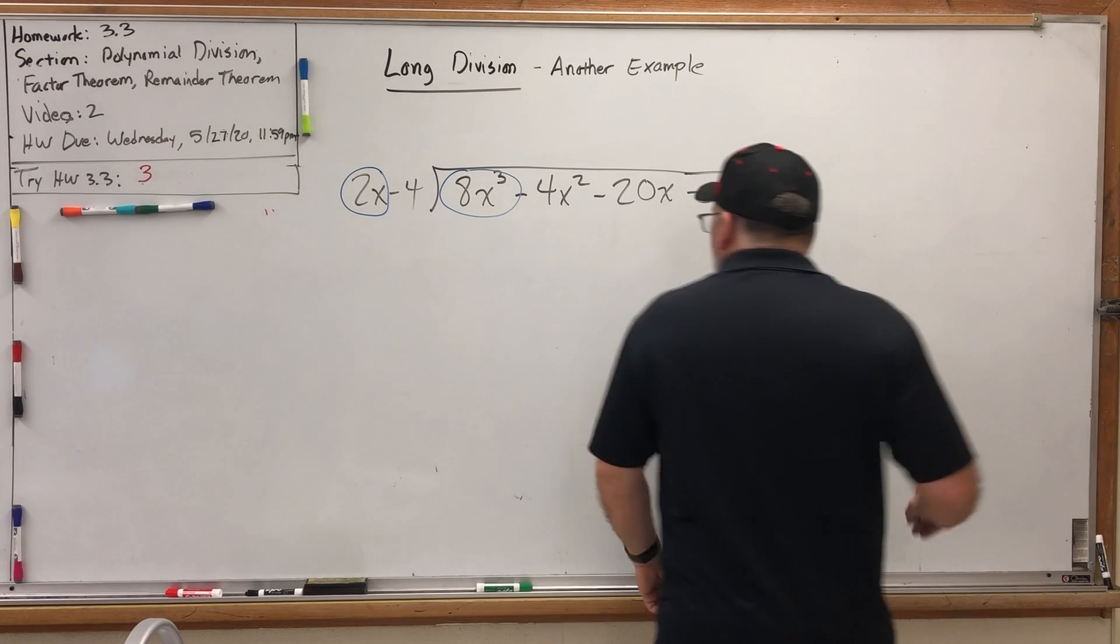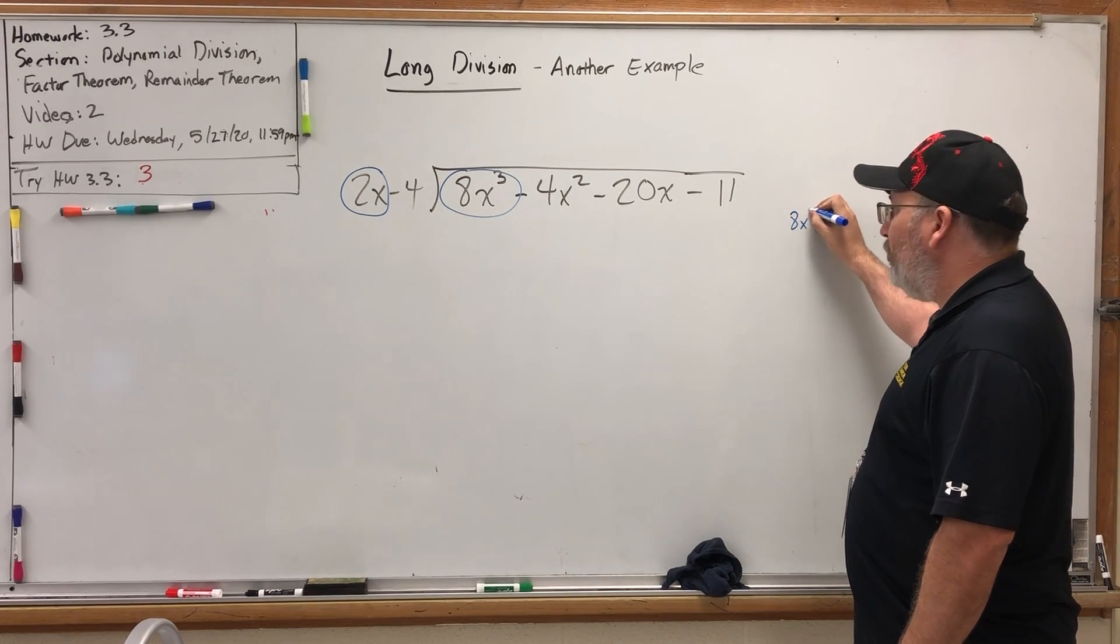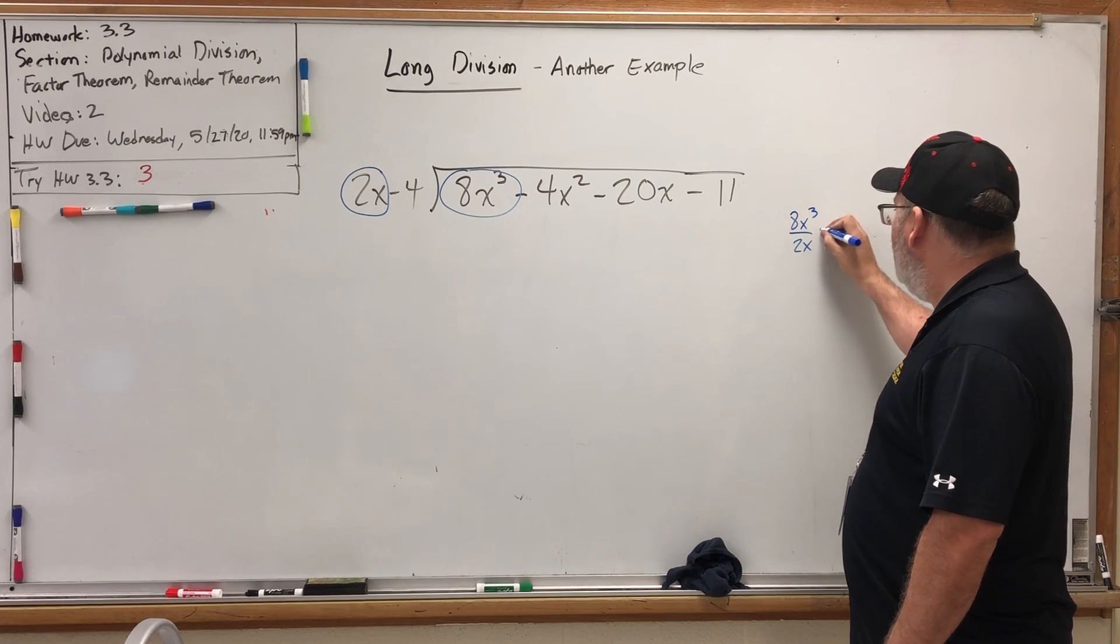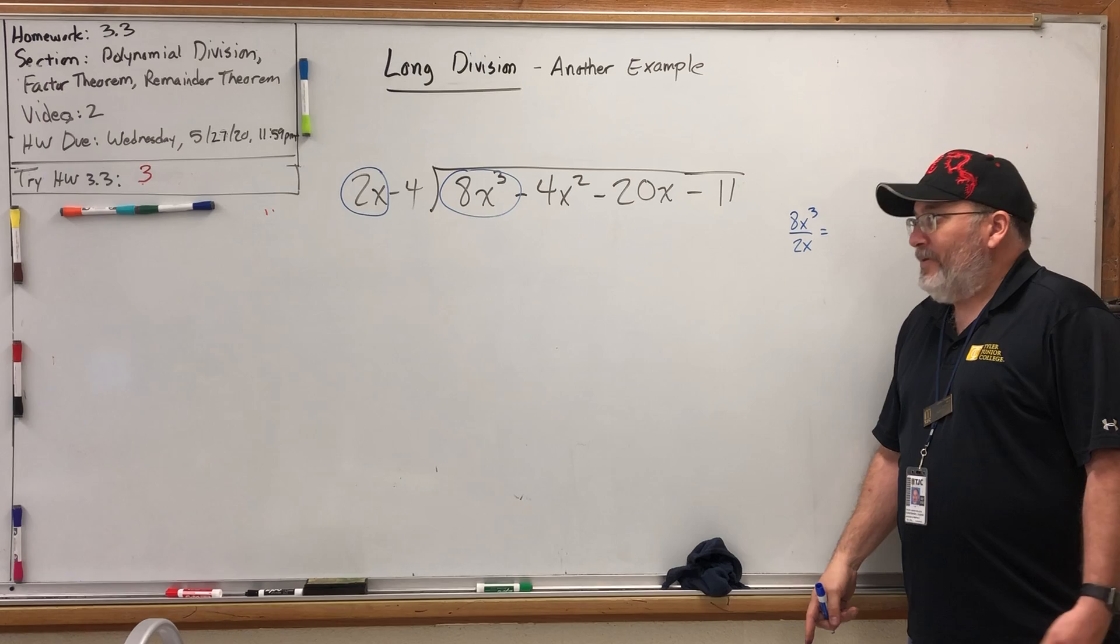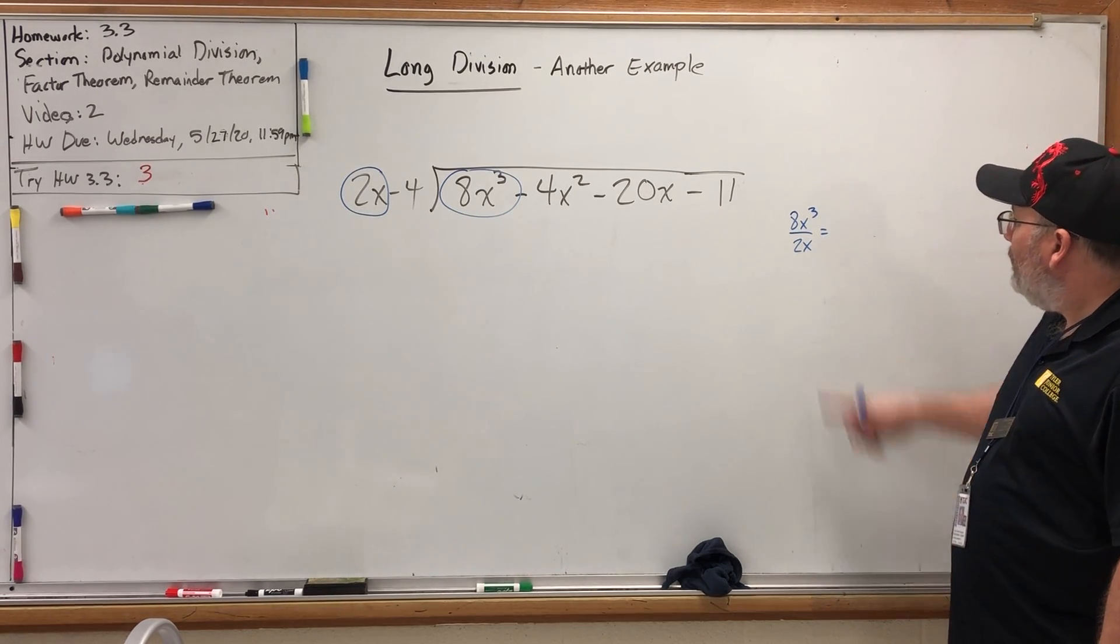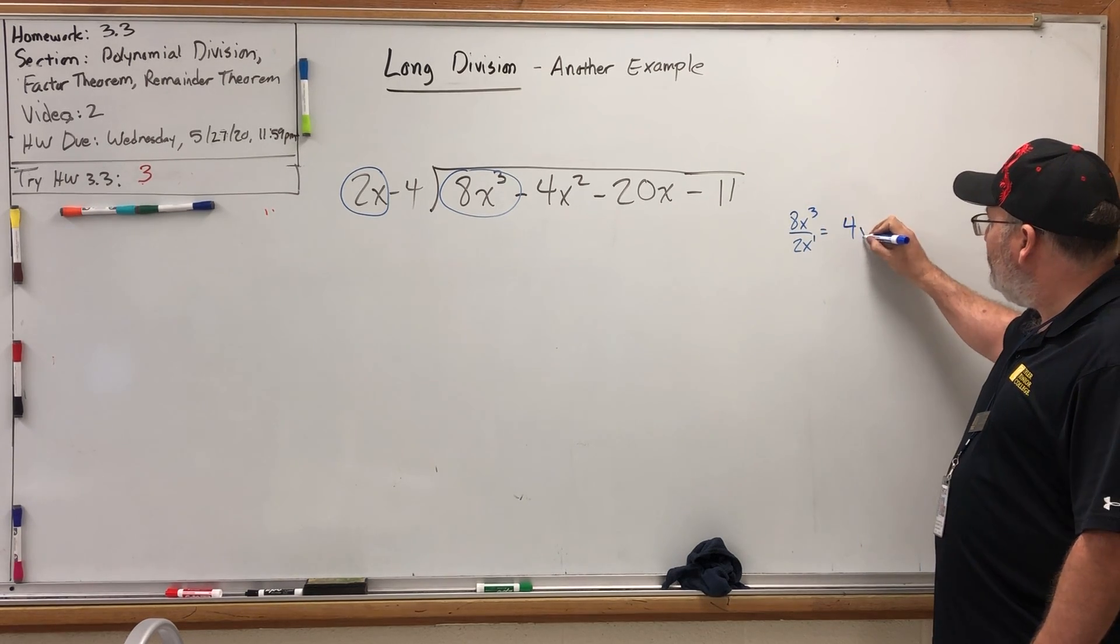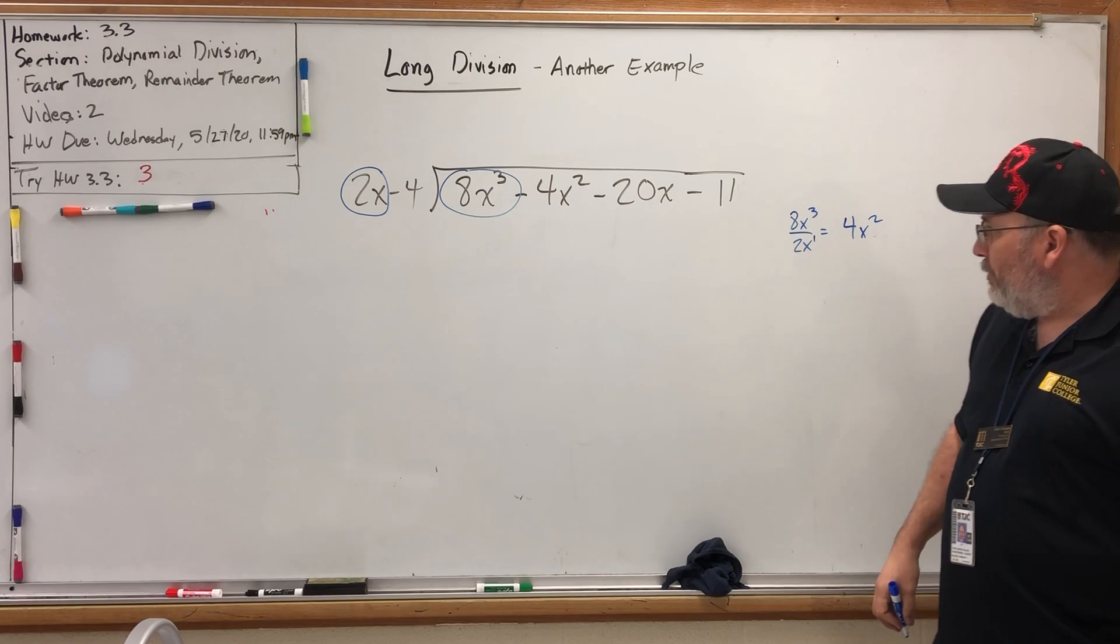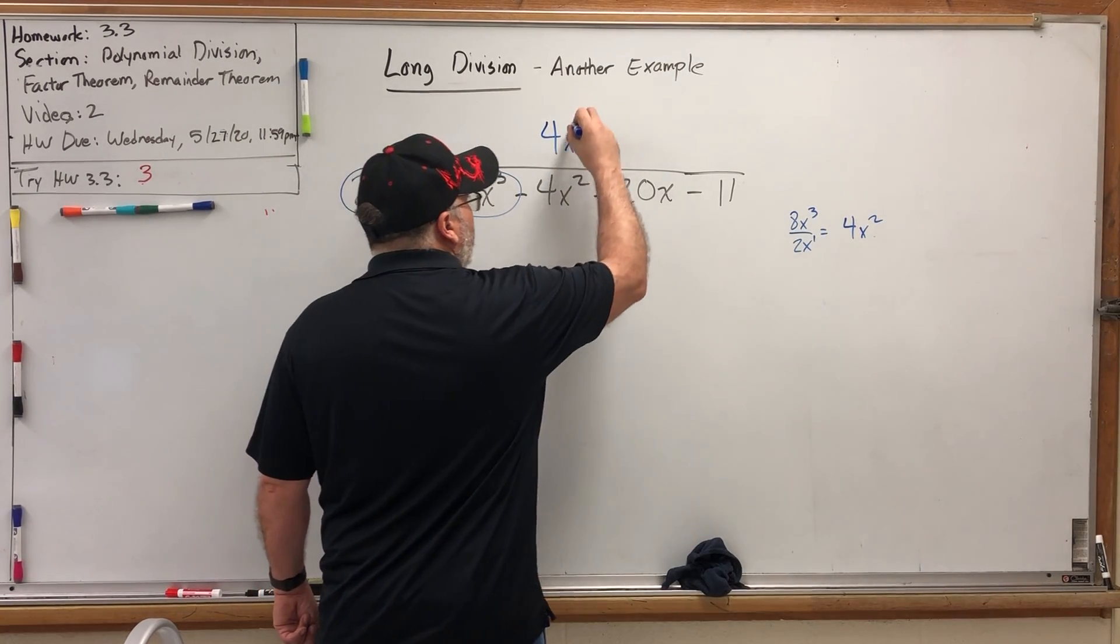But I'm going to go to the side and write 8x³ over 2x to get the answer. Well, 8 divided by 2 is 4, and we can subtract powers. 3 minus 1 is 2. So 4x² is our first term in the quotient.